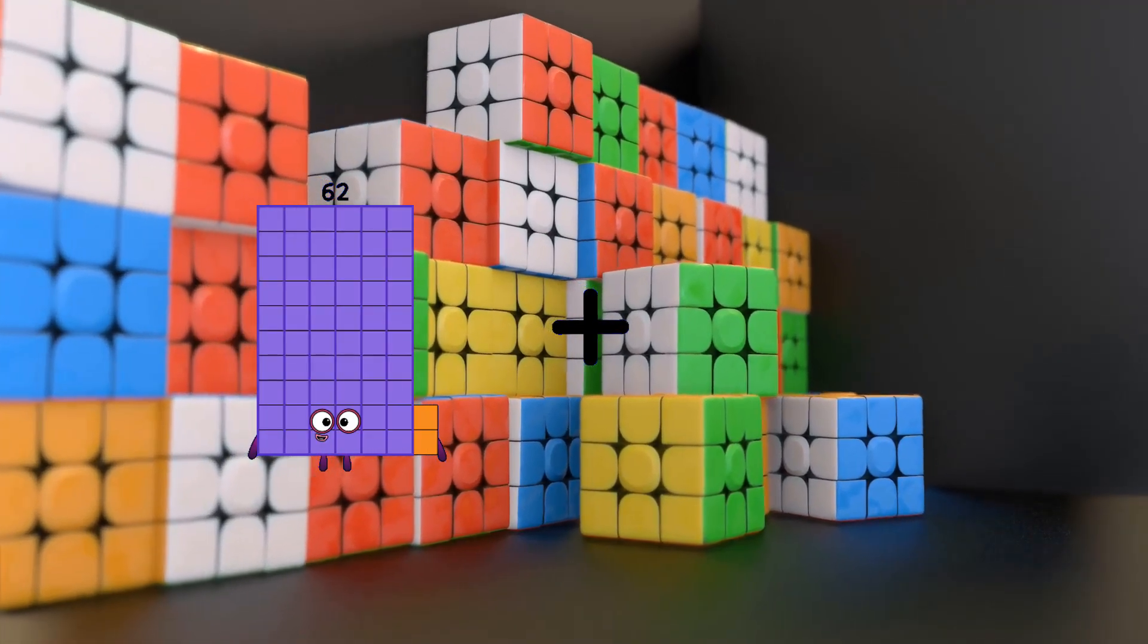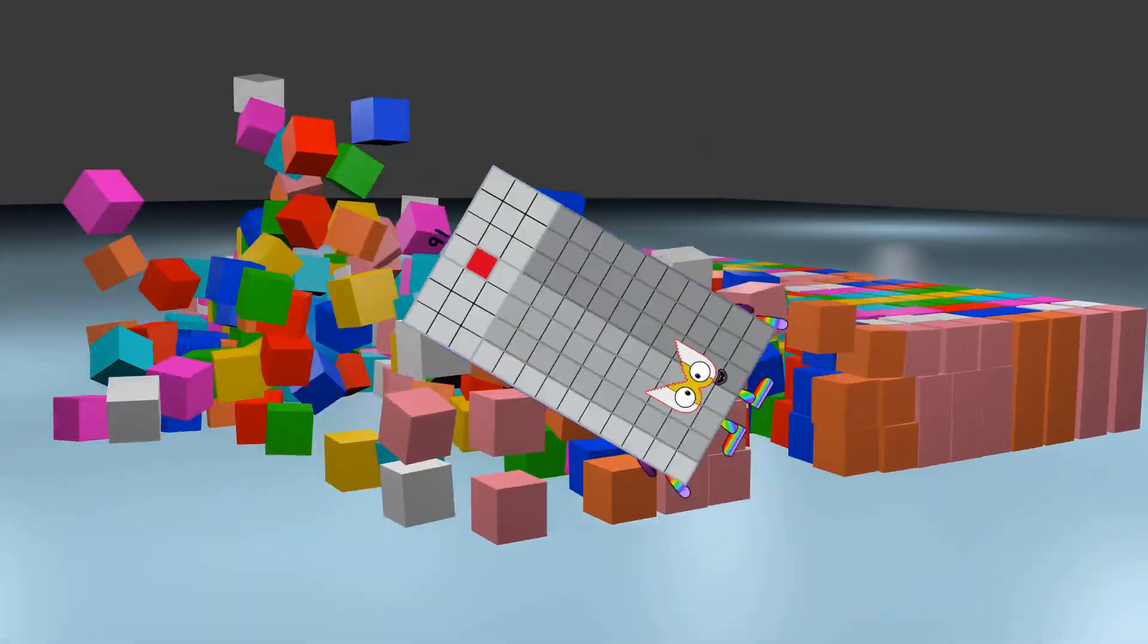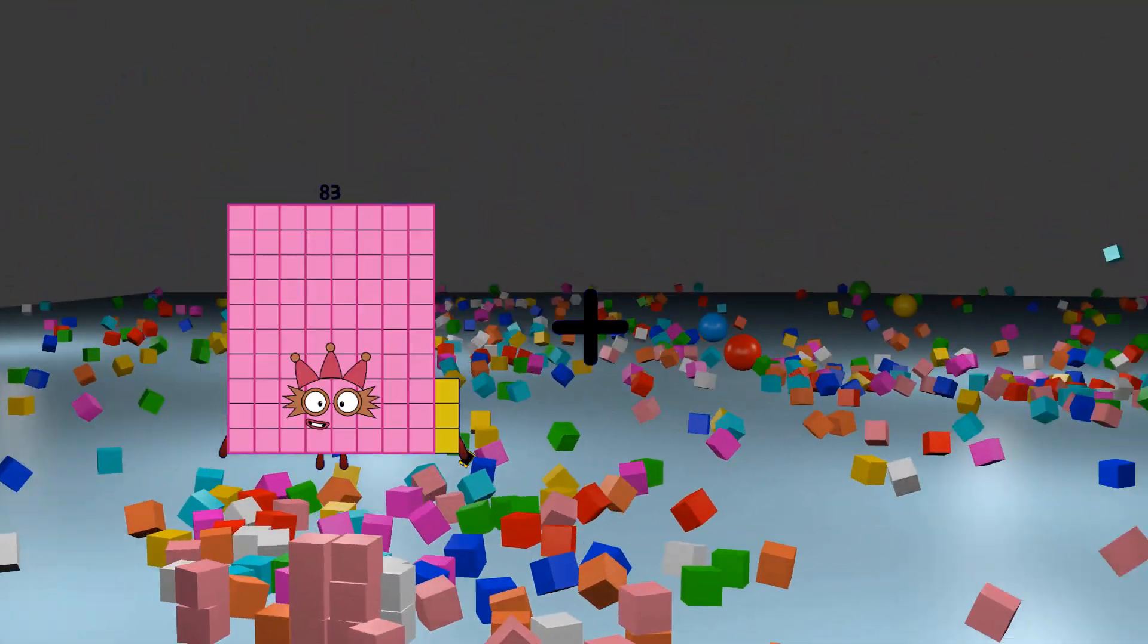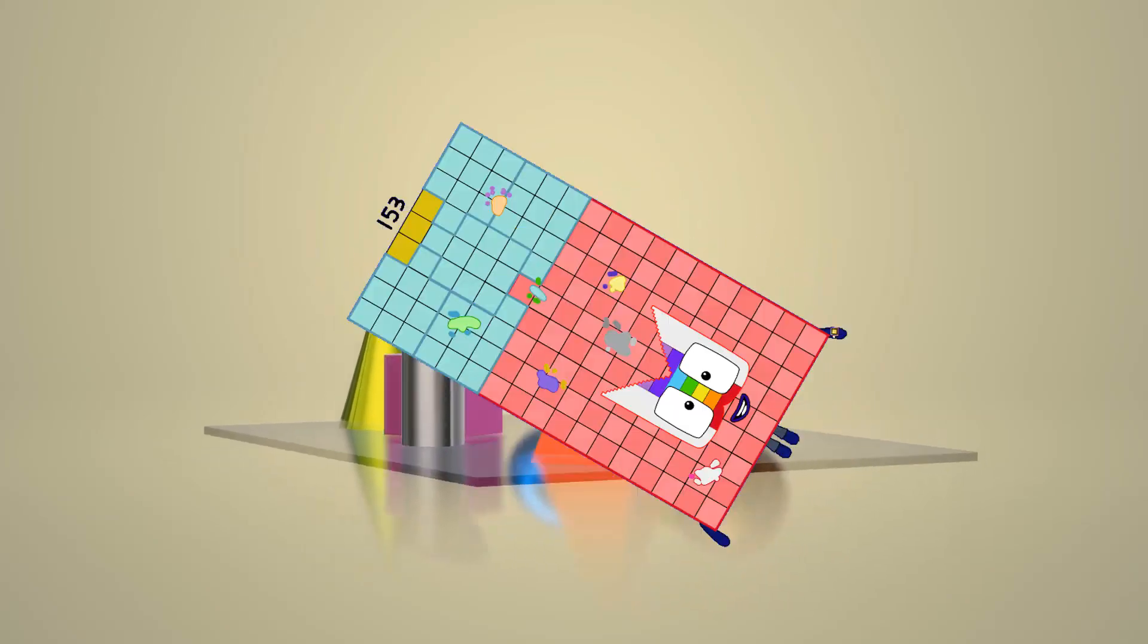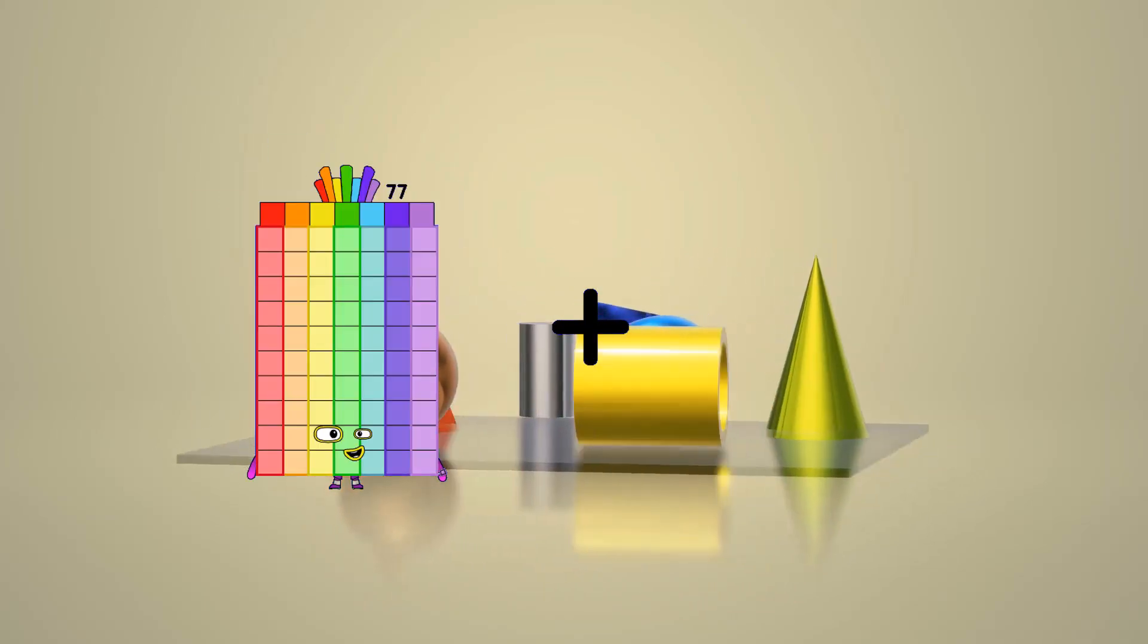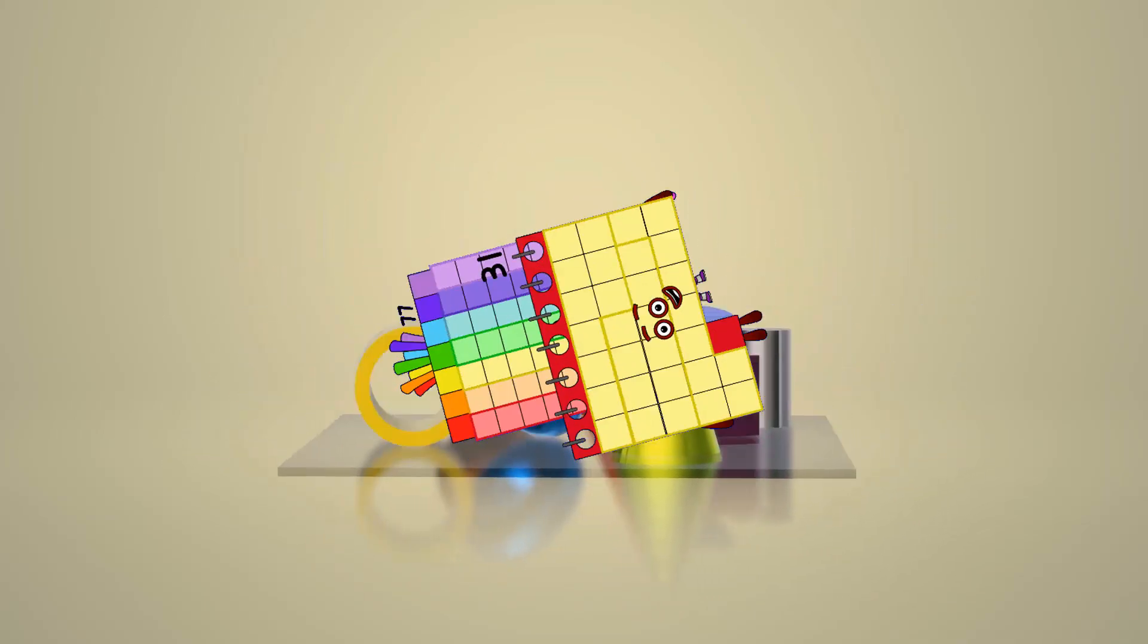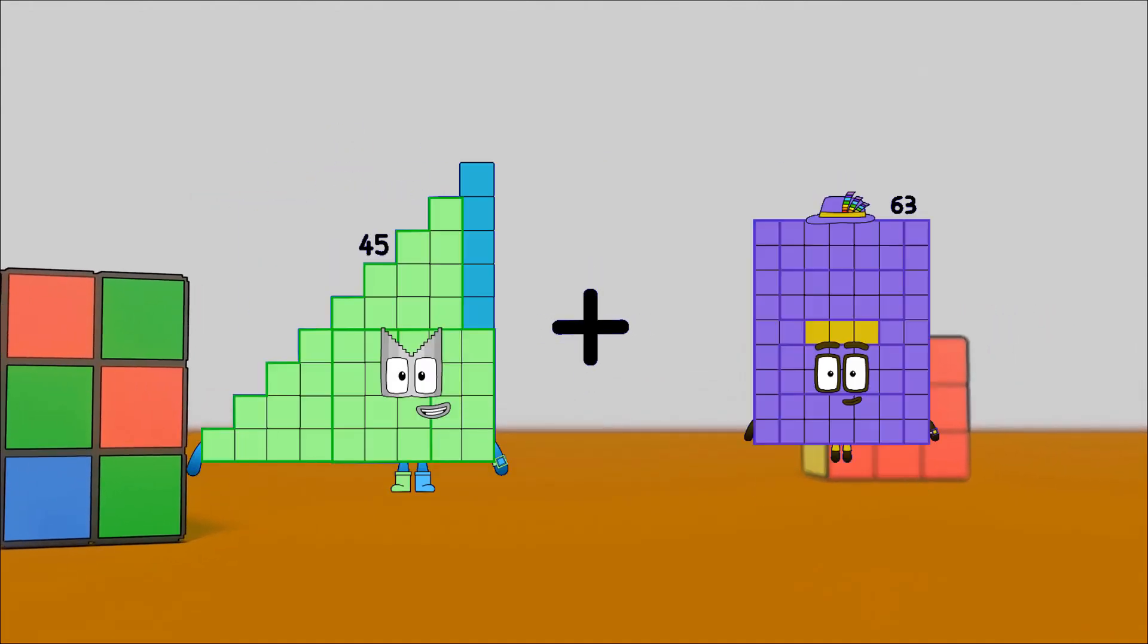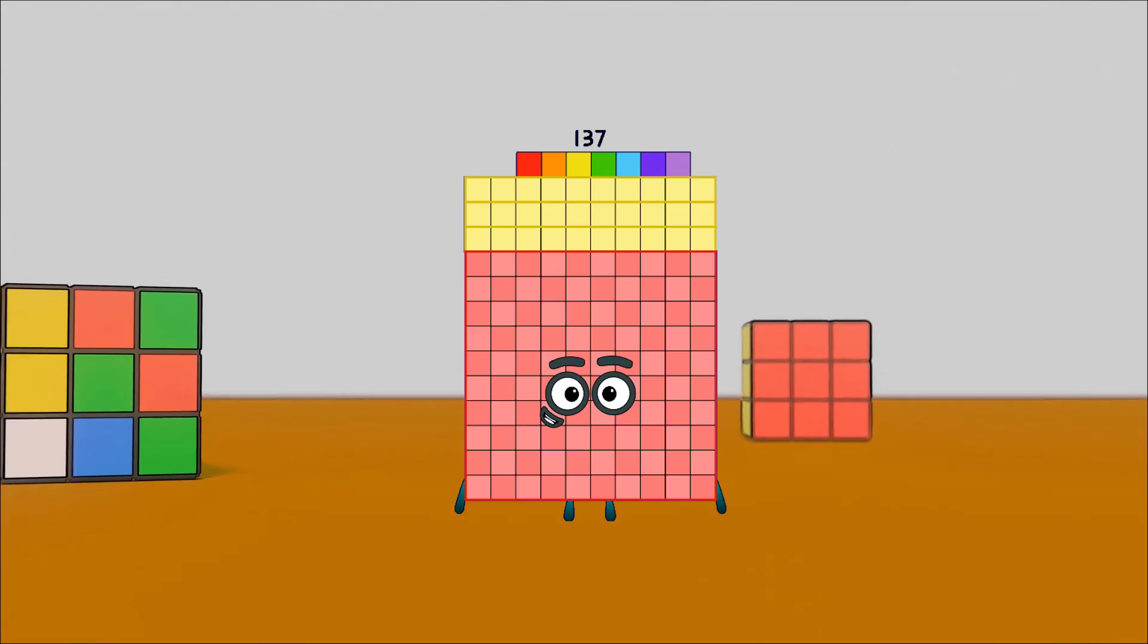62 plus 91 equals 153. 83 plus 70 equals 153. 77 plus 31 equals 108. 45 plus 92 equals 137.